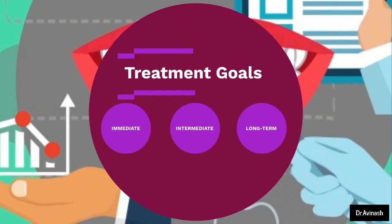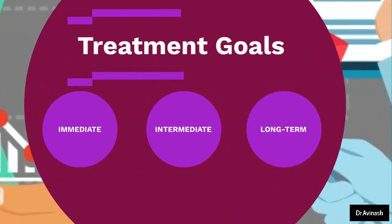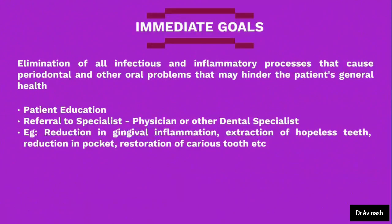Let us understand what are the goals of periodontal treatment. We can divide the goals into three parts: immediate, intermediate, and long-term goals. In immediate goals, we try to eliminate all infectious and inflammatory processes that cause periodontal and other oral problems that may hinder the patient's general health.